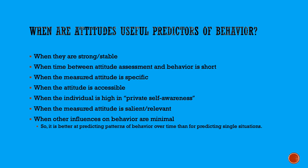Finally, attitudes are better predictors when other influences on behavior are minimal. Another way of thinking about this is that attitudes are better at predicting patterns of behavior over time than they are for predicting single incidents of behavior. If I'm looking at your attitudes toward recycling and want to see if you recycle something today in an experiment, there are all kinds of reasons why you may or may not recycle in that one specific situation. But your attitude should, over time, show more of a tendency to recycle than not. So if I'm trying to predict long-term patterns of behavior rather than single instances, the attitude will be more effective.